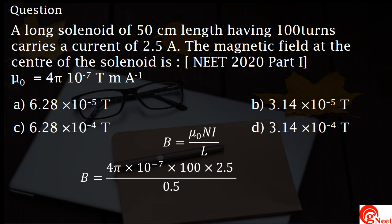Therefore, the answer comes out to be 6.28 × 10⁻⁵. Option A is correct.